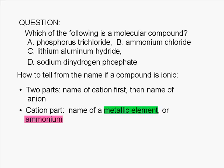The only remaining choice is A, phosphorus trichloride. It doesn't have a metallic element. Phosphorus is a nonmetal, and it doesn't have ammonium. Therefore, phosphorus trichloride is a molecular compound.